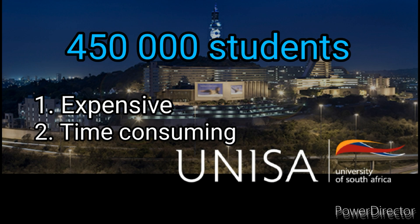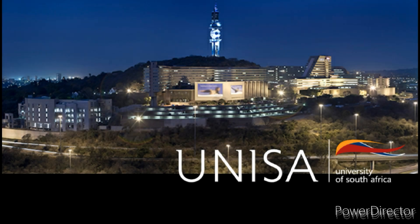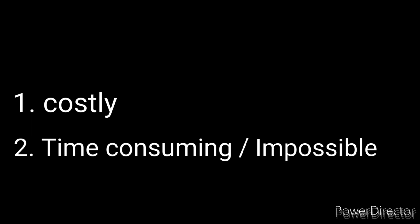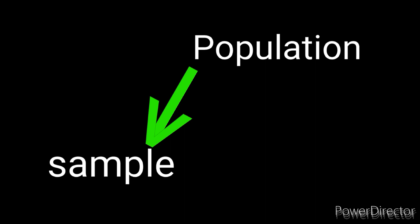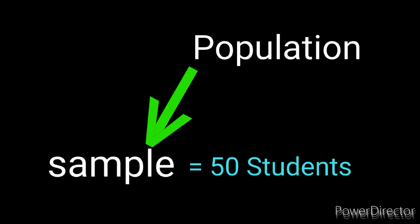If we have to approach the whole population of UNISA students, it's going to be prohibitively expensive and time-consuming. Whenever the population is very large, it is impossible to approach the whole population — it is very costly and time-consuming or even impossible. So what we're going to do is pick out a sample. A sample is a portion taken from the population, maybe 50 students.